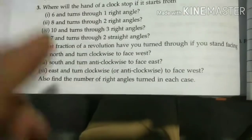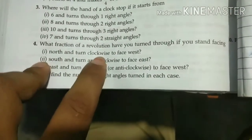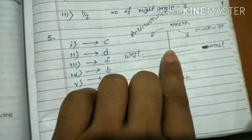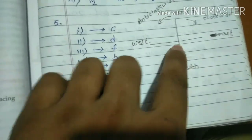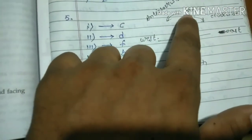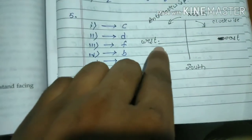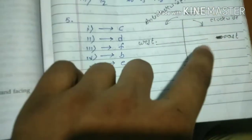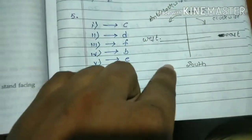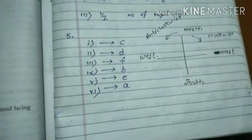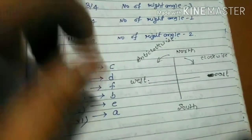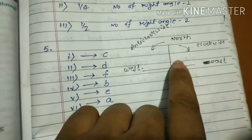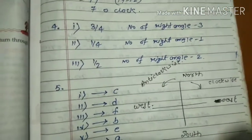Let's see your solution. Question first: north and turn clockwise to face west. You are at north. Where is west if you go clockwise? This means 1 part, 2 parts, and 3 parts. Total is 4, and you've turned 3. So the right angles will be 3 upon 4.